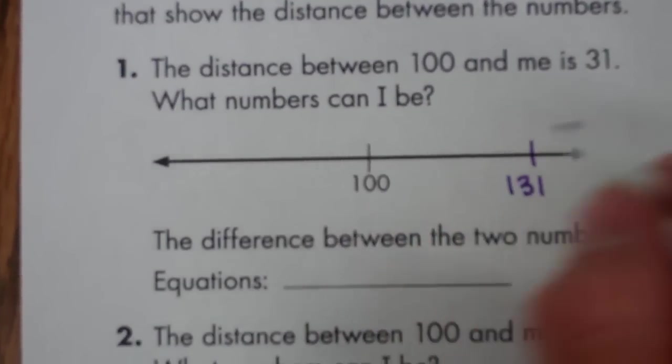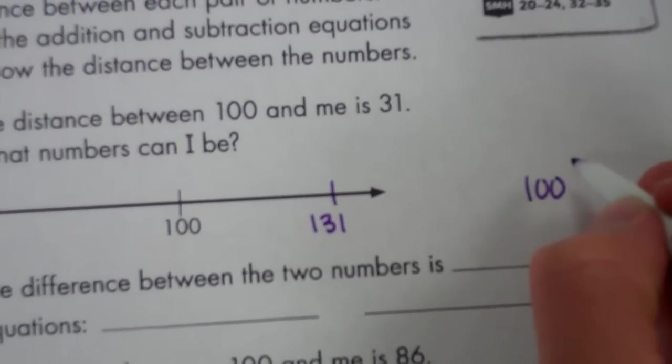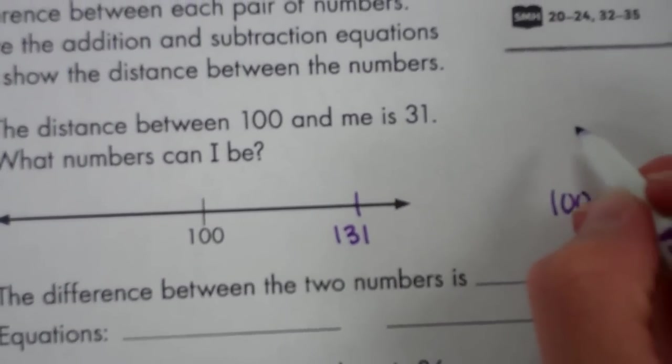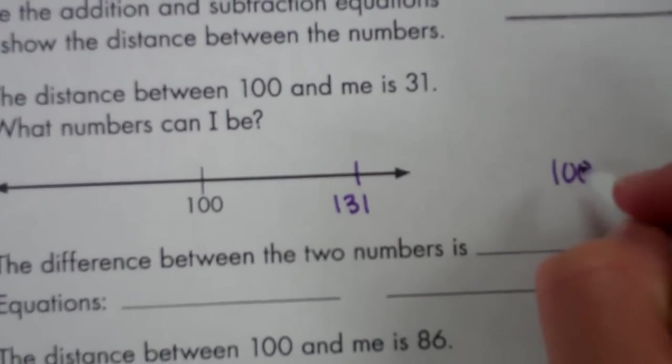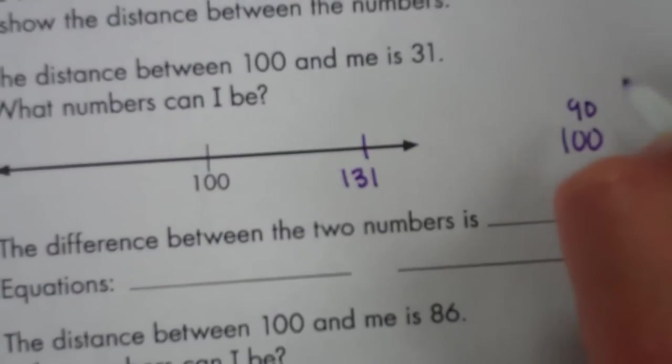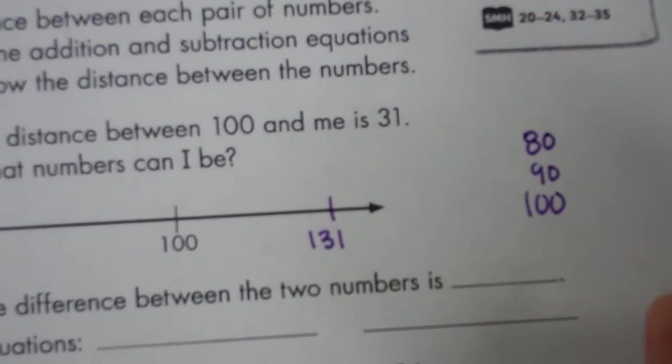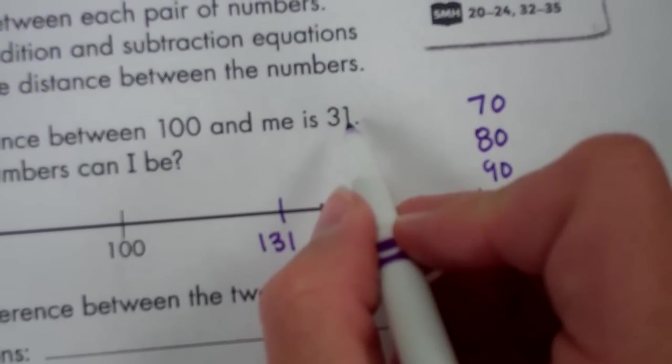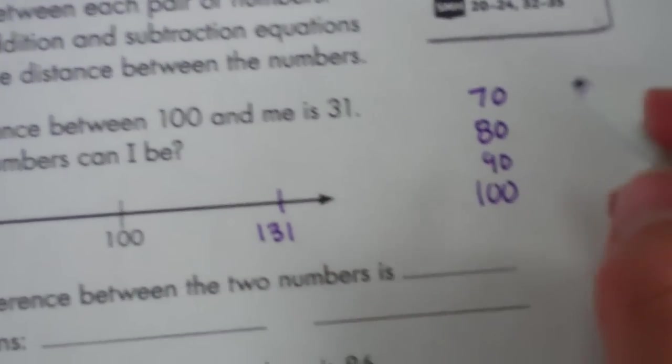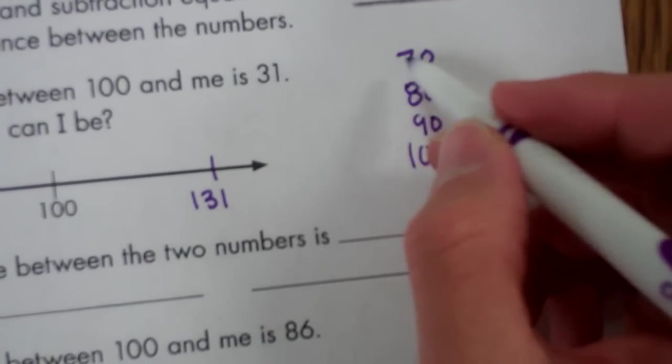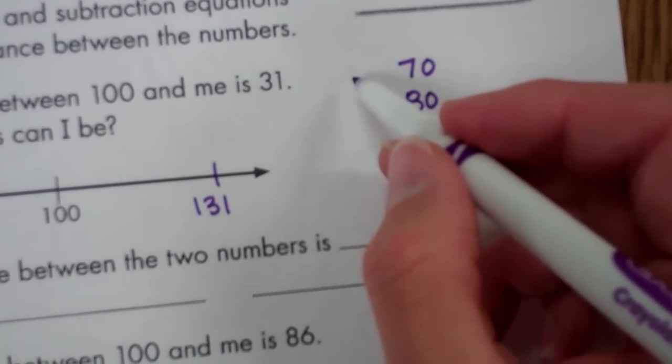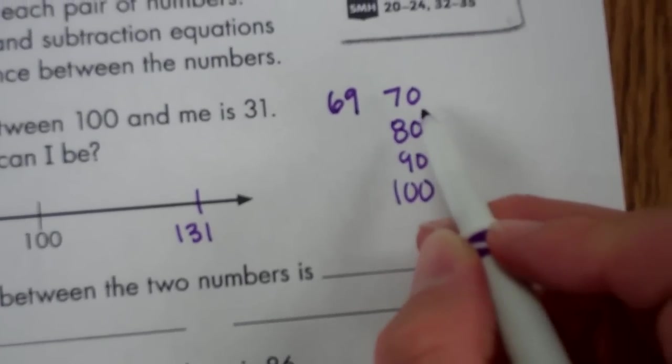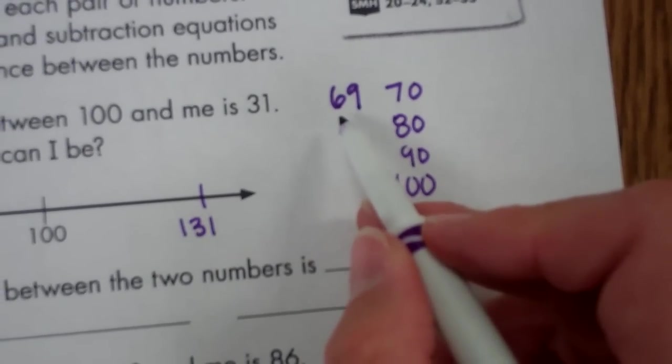So if you start at 100 on a hundreds chart, and you subtract or count backwards by tens, you're going up the hundreds chart. So it would look like this: 10, 20, 30, and then you have to go one to the left because you're subtracting 31. So the number right before 70 would be 69. So 100 minus 31 equals 69.